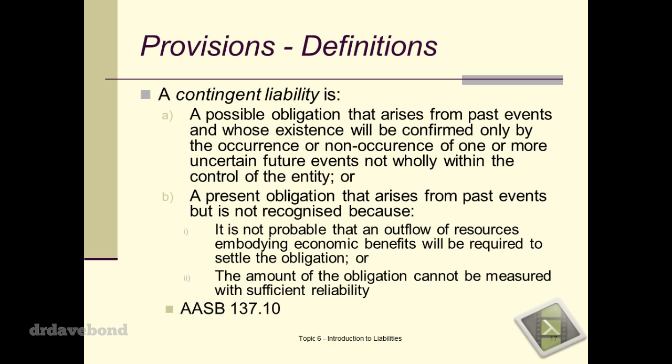The second side of a contingent liability picks up on probability and reliability. A provision is a liability where you have both reliability and probability. If you can't reliably measure how much — say you're a new company with a brand new product and have no idea what warranty payments will be — you can't come up with a reliable measure, so you wouldn't provide for it, you would disclose it. If it's not probable that an outflow will happen, it also goes into a contingent liability rather than being recognised as a provision.